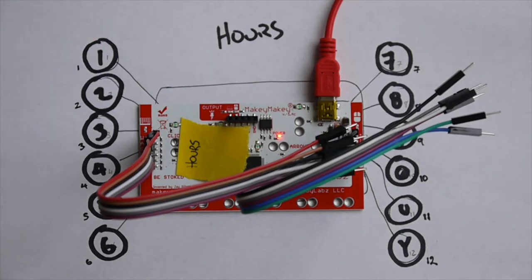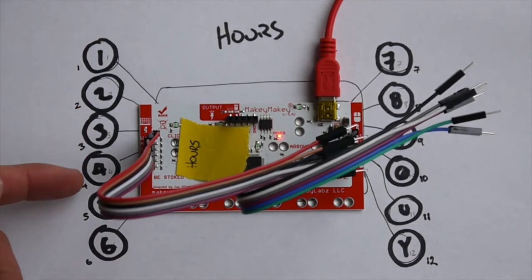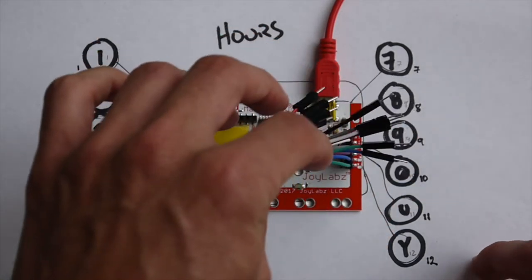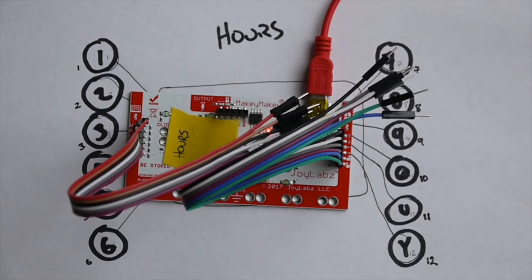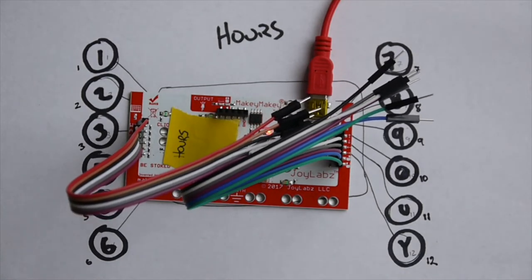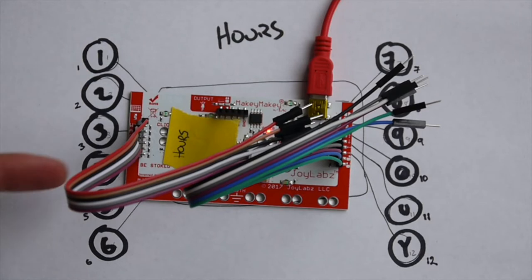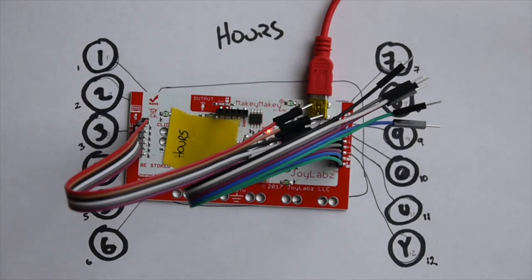Now for my hours Makey Makey, I've remapped the keys on the left side to 1, 2, 3, 4, 5, 6 and the keys on the right side to 7, 8, 9, 0, U and Y. I've done something a little bit different for the Minutes Makey Makey as well. It's totally okay if you've remapped them differently, you really just need to keep track of where you're at. Cool. Let's jump over to Scratch and code this beast up.